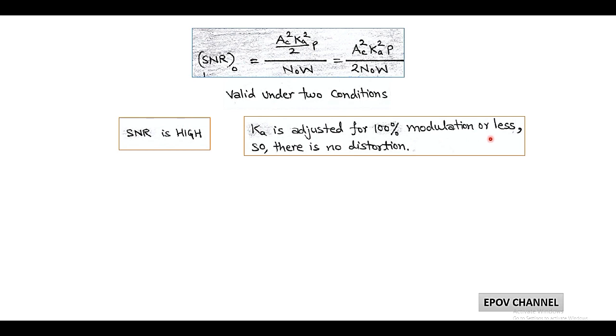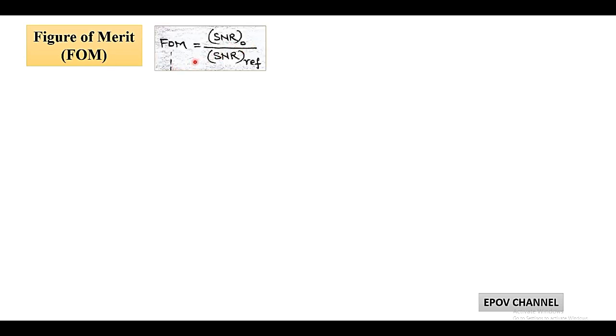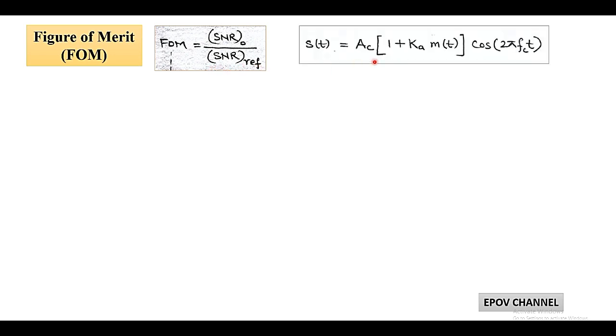Next, in order to analyze noise performance in the AM envelope detector, we find the figure of merit. The figure of merit is the ratio of output SNR to reference SNR. For the reference SNR, we consider input signal S(t), which is double sideband full carrier: S(t) = AC·[1 + KA·m(t)]·cos(2πfct).